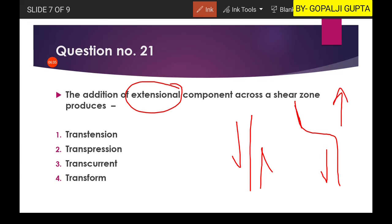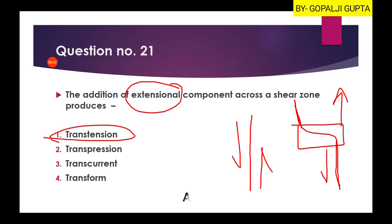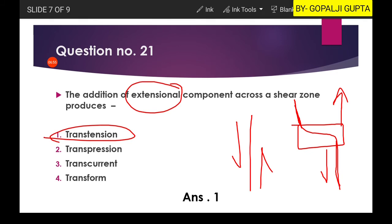Okay, so this is the stress, shear zone in this region and in this region, while in this region you have the extensional component. So this is known as the transtension: transform plus extension. And hence first option will be our right answer. Now here one thing is also to be noticed.